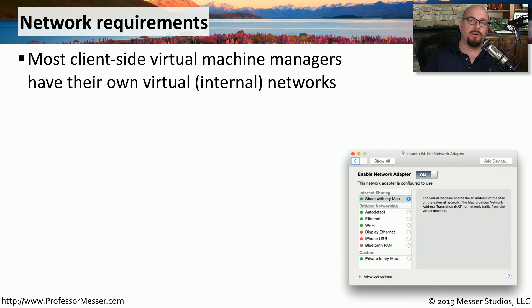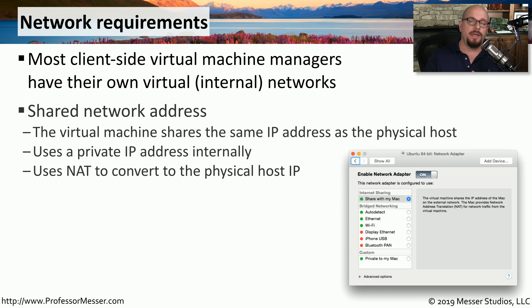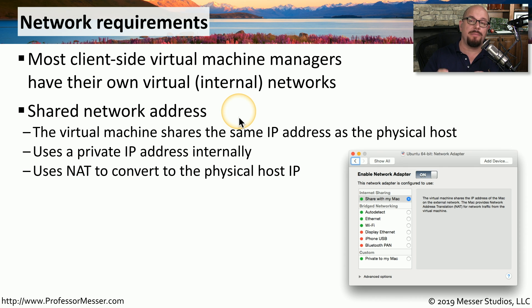There are many different ways to configure the networking settings for virtual machines running on your desktop. One type of network configuration is a shared network address, meaning the virtual machine uses the same IP address as your physical host. It uses network address translation to translate between an internal address and the external address shared by your physical computer.